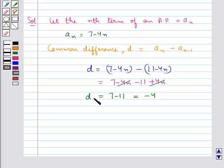So we get the common difference d is equal to -4. Hence our final answer is common difference d is equal to -4.